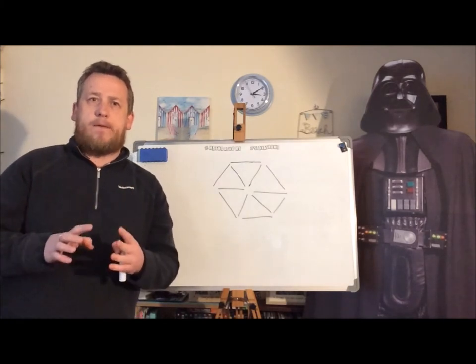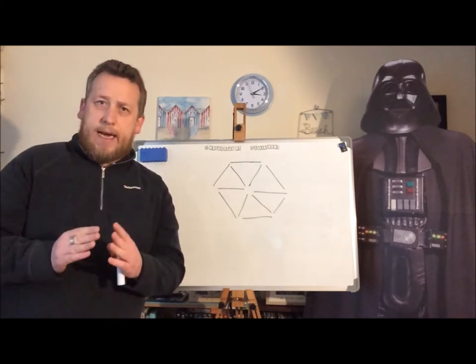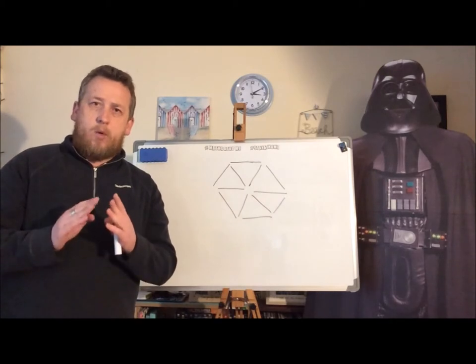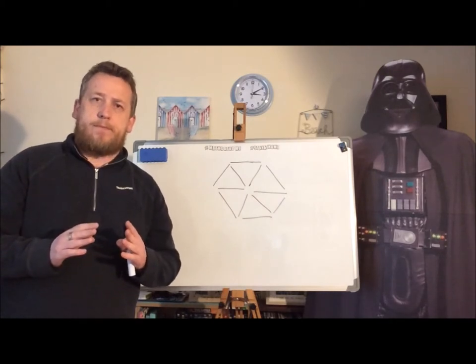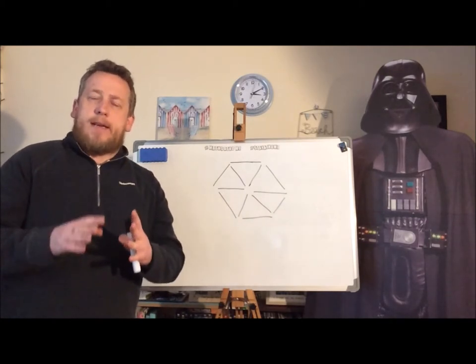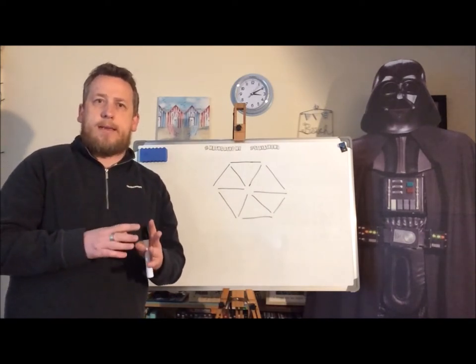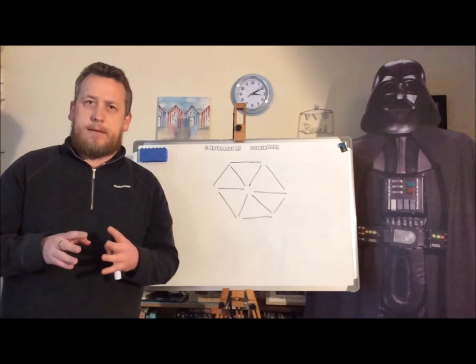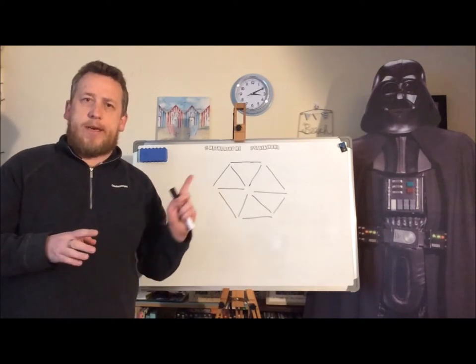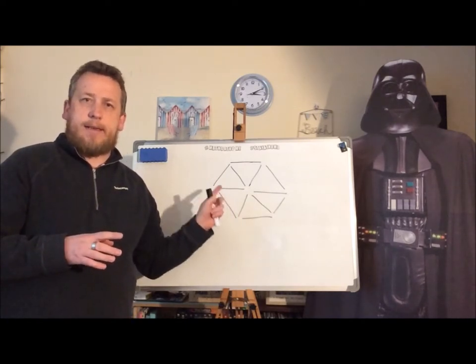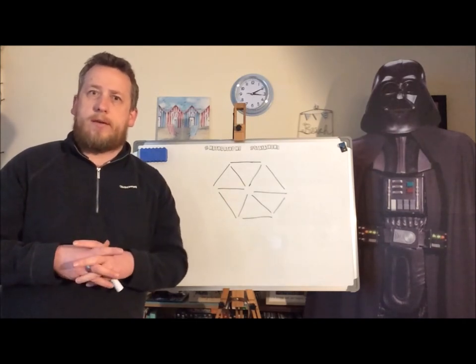When you've done that, you want to be left with three equilateral triangles. So a quick reminder: an equilateral triangle is a triangle where all three sides are the same length. Each of the six triangles inside that hexagon are equilateral triangles because each of the lengths is the same size.